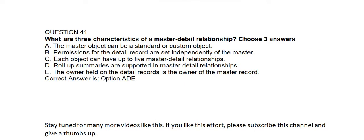Question number forty-one. What are the three characteristics of a master-detail relationship? Option A: The master object can be a standard or custom object. Option B: Permissions for the detail record are set independently of the master. Option C: Each object can have up to five master-detail relationships. Option D: Roll-up summaries are supported in master-detail relationships. Option E: The owner field on the detail records is the owner of the master record.